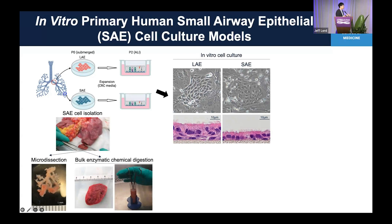This works for normal lungs, but in CF lung or other disease lungs, the airway is really inflamed and adhesive to fibroblasts or mesenchymal structures, making it really hard to micro-dissect airways from disease tissue. So we developed a bulk enzymatic chemical digestion approach — we cut a very peripheral piece of the lung and chemically digest it, then see what we get after filtering. Our media selects epithelial cells to be expanded. We characterized small airway cells obtained from both methods and they show really similar phenotype, so now we have established the protocol to get small airway cells from any lung disease.